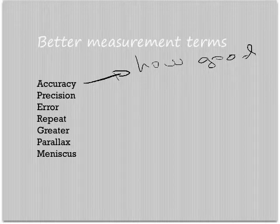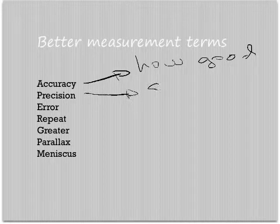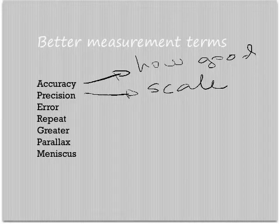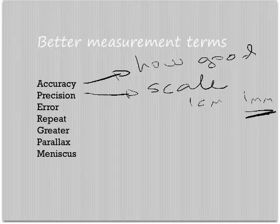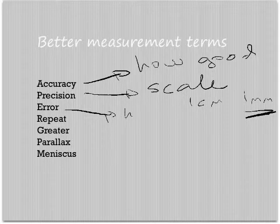However, what's precision? Precision is essentially a scale. If you compare a centimeter ruler, one with centimeter divisions, compared to a millimeter ruler, then this one is more precise. Error is how far you could be off in each measurement.